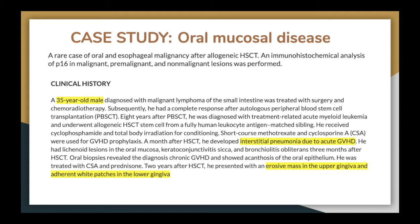For the oral mucosa disease case study — a rare case of oral and esophageal malignancy after allogeneic HSCT — an immunohistochemical analysis of P16 in malignant, premalignant, and nonmalignant lesions was performed to observe whether P16 would be an indicator for HPV. A 35-year-old male was diagnosed with malignant lymphoma of the small intestine and treated with surgery and chemoradiotherapy. He had a complete response after peripheral blood stem cell transplantation (PBSCT). Eight years after the PBSCT, he was diagnosed with treatment-related acute myeloid leukemia and underwent allogeneic HSCT stem cell transplantation. A month after the HSCT, he developed interstitial pneumonia due to acute GVHD. He also had lichenoid lesions in the oral mucosa. Two years after the HSCT, he presented with an erosive mass in the upper gingiva and adhering white patches in the lower gingiva.